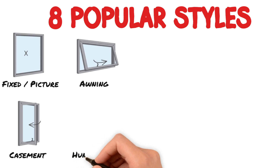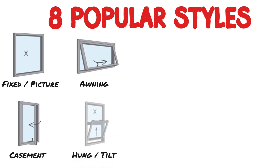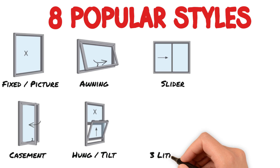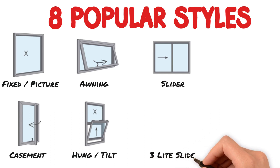A hung window, sometimes referred to as a tilt window, opens up or down. These come as a single hung that opens at the bottom only, or a double hung that opens at the top and bottom. A sliding window, or slider, opens to the left or right and can also come in a double sliding version where both sides operate.